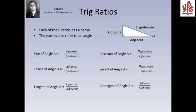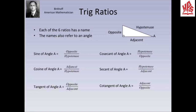Each of these six ratios has a name which refers to an angle. Consider angle A. The ratio opposite over hypotenuse is known as the sine of angle A, and the ratio hypotenuse over opposite is known as the cosecant of angle A — cosecant is the reciprocal of sine. The ratio adjacent over hypotenuse is known as the cosine of angle A, and the ratio hypotenuse over adjacent is known as the secant of angle A — secant is the reciprocal of cosine. The ratio opposite over adjacent is known as the tangent of angle A, and the ratio adjacent over opposite is known as the cotangent of angle A — cotangent is the reciprocal of tangent.